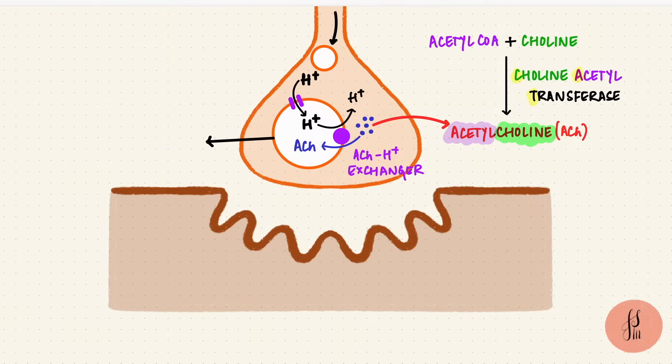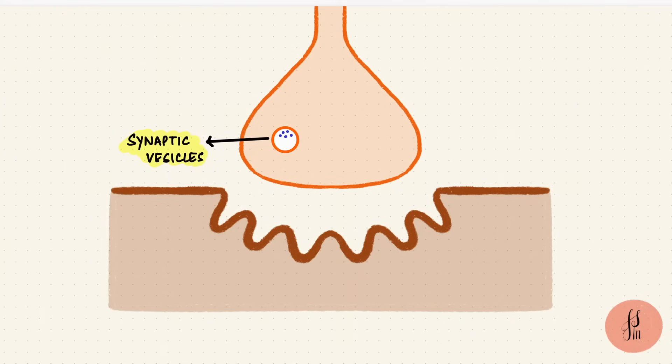These are called synaptic vesicles, and each synaptic vesicle has lots of acetylcholine molecules in them, in the range of 10,000.